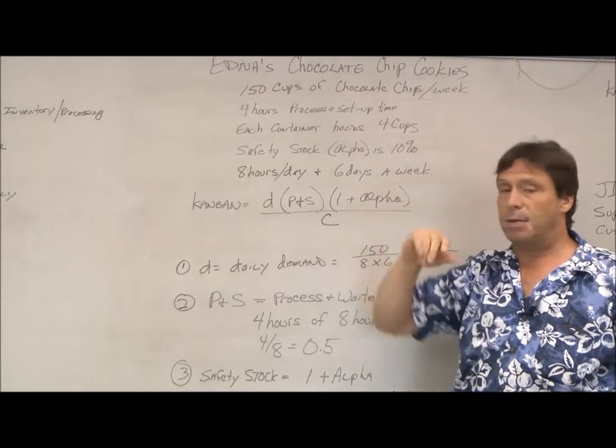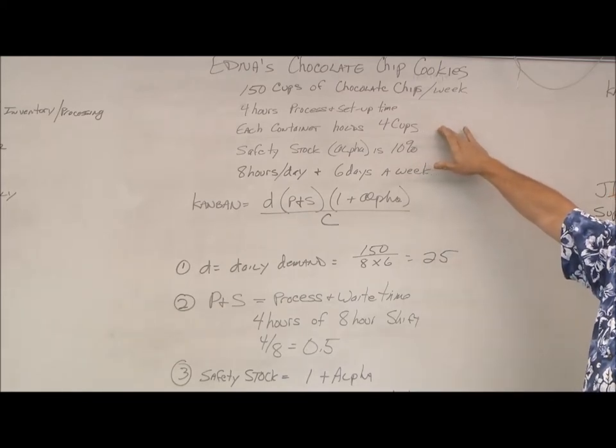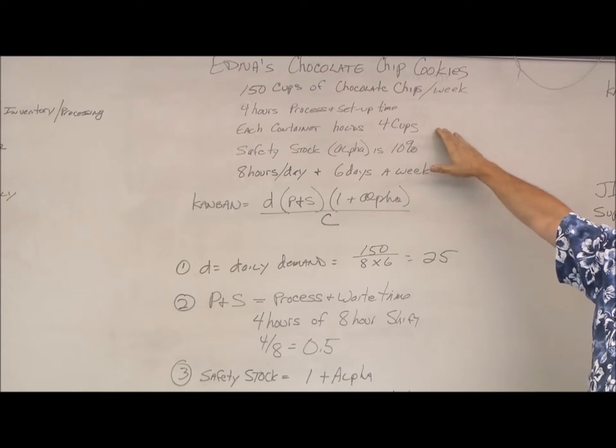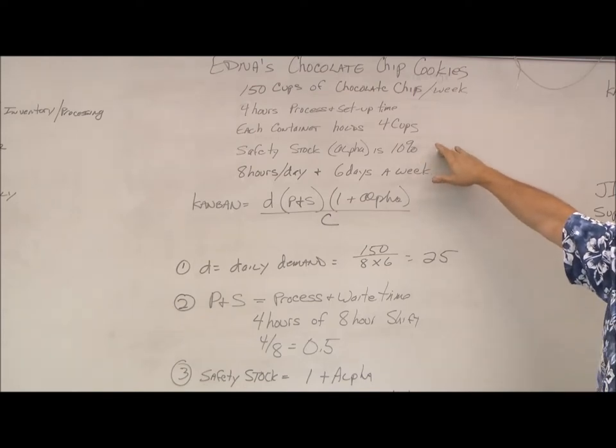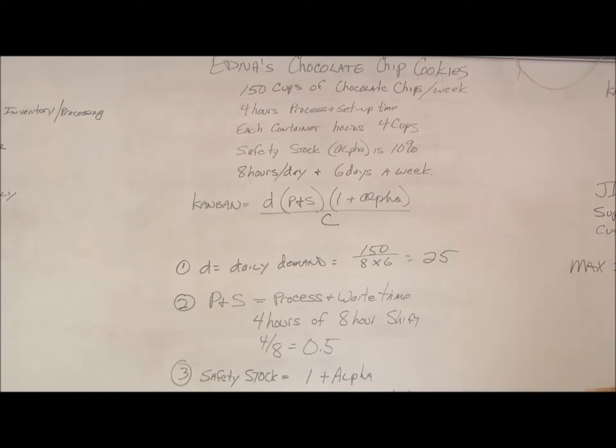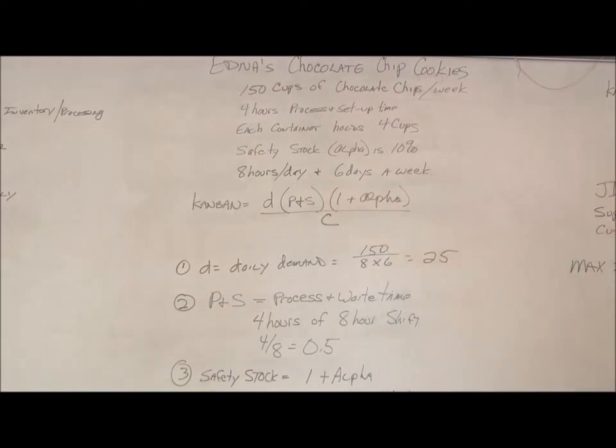So in a Kanban system, we use containers, enough to make so many cookies. So each container Edna has can hold four cups of chocolate chips. We want some safety stock just in case the customer wants more quickly, so we have some room to react here. So we're going to put in 10% safety stock. And Edna works eight hours a day, six days a week.